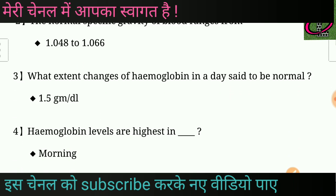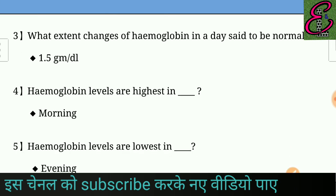Question number three: To what extent do changes of hemoglobin in a day said to be normal? Answer: 1.5 gram per deciliter. Question number four: Hemoglobin levels are highest at which time of day? Answer: Hemoglobin levels are highest in the morning.